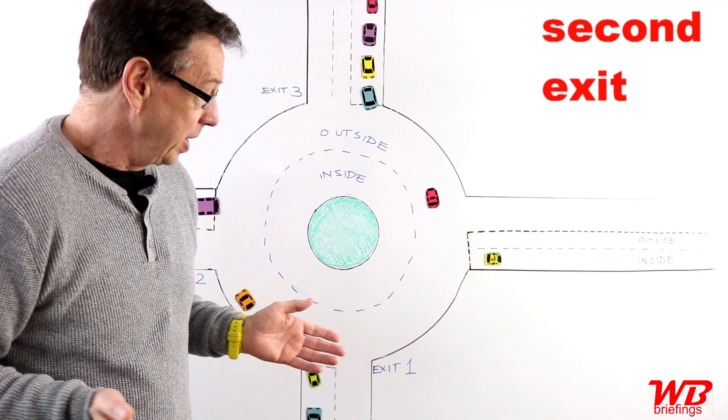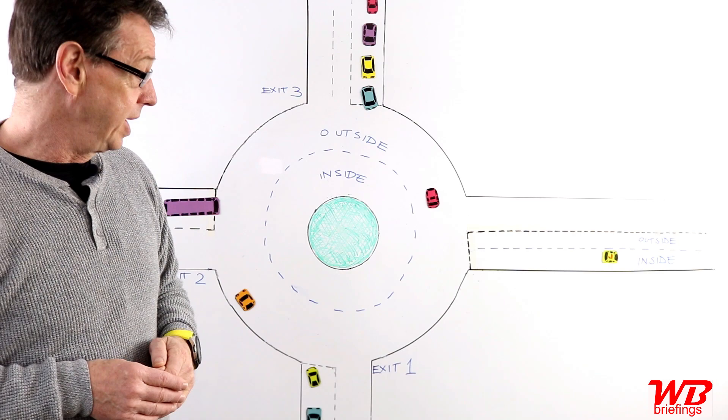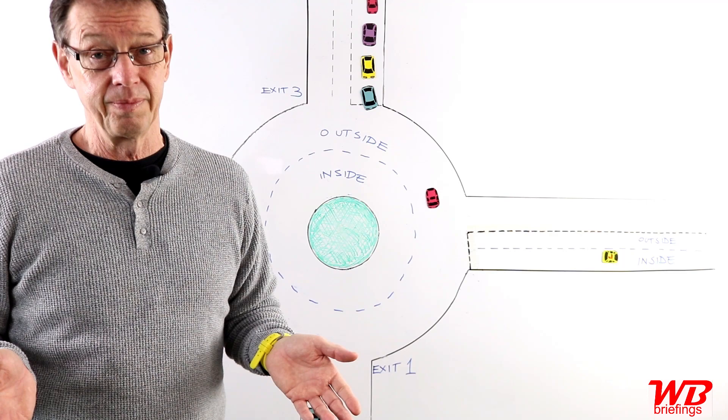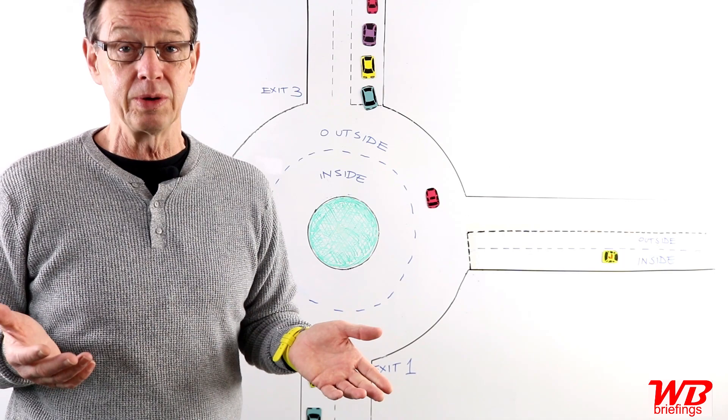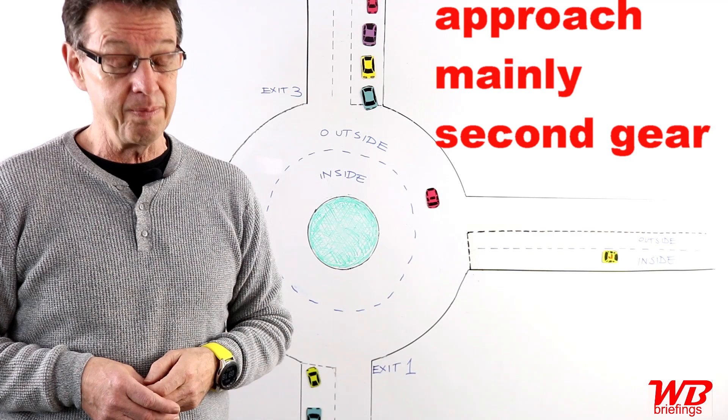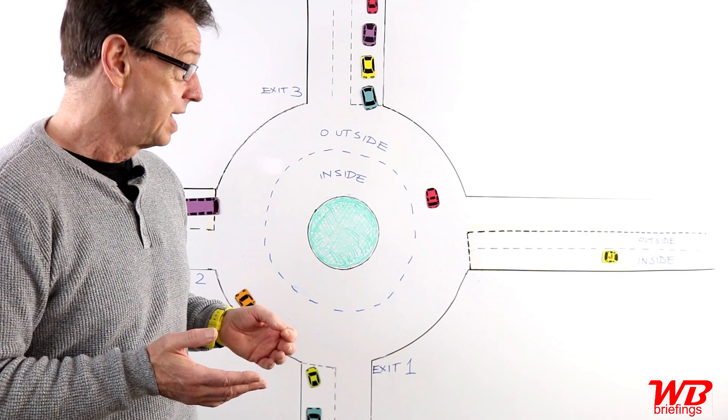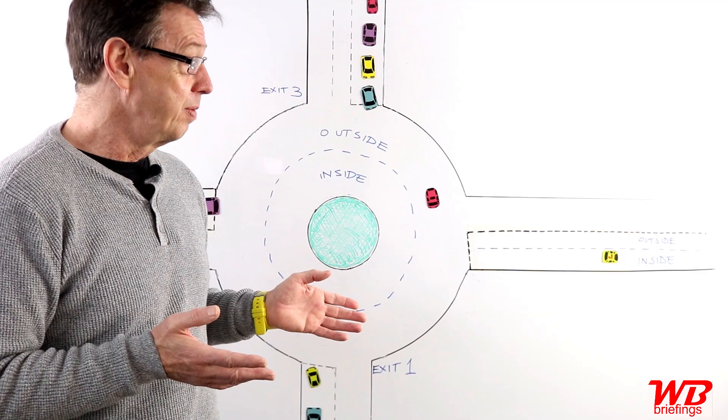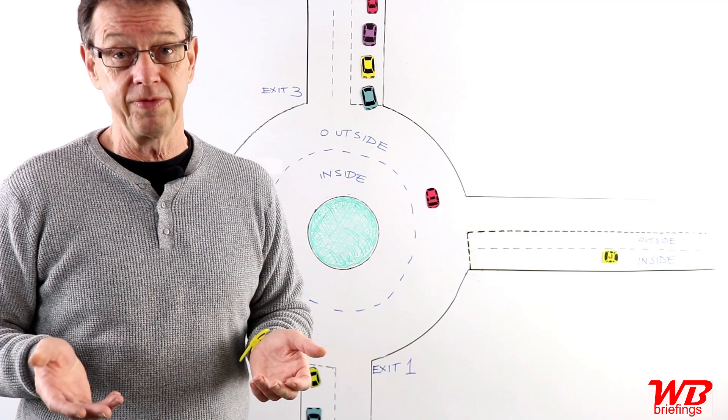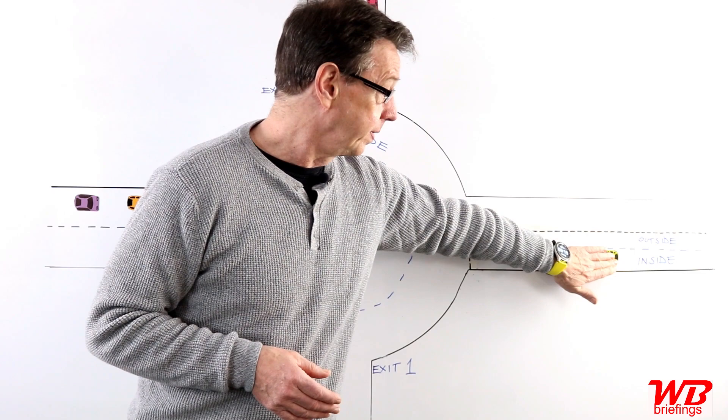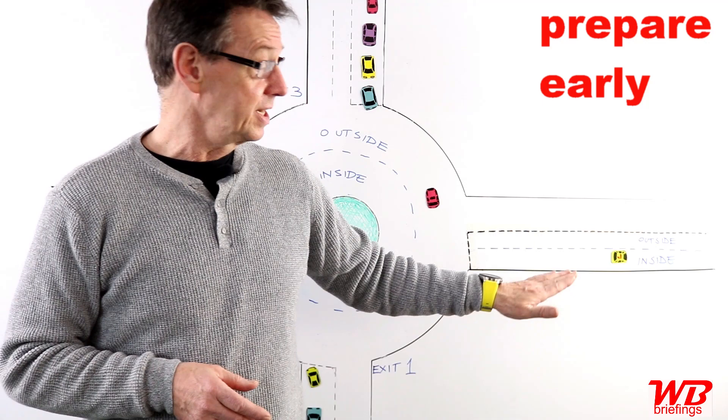First question is, which gear would you normally approach a roundabout in? I teach my students, generally speaking, the majority of the time in built-up areas, if it's relatively clear, then it's going to be second gear. It can vary. It could be first gear if it's stacked out, it's queuing, or it's a huge roundabout on the outskirts of towns and cities, then you might want third gear.